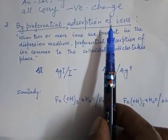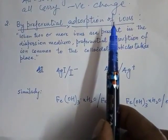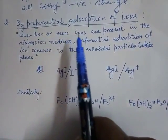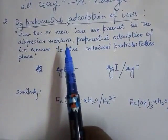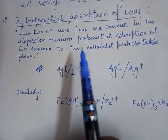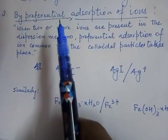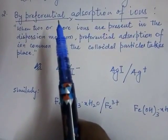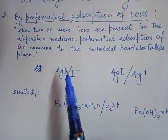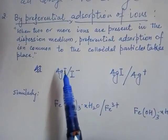Colloidal particles preferentially adsorb ions which are common to them. When two or more ions are present in the dispersion medium, the preferential adsorption of the ion common to the colloidal particle takes place. The colloidal particle will prefer the ion which is common to it, even though several other ions are present in the solution.